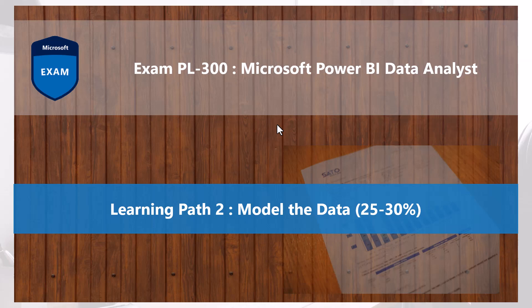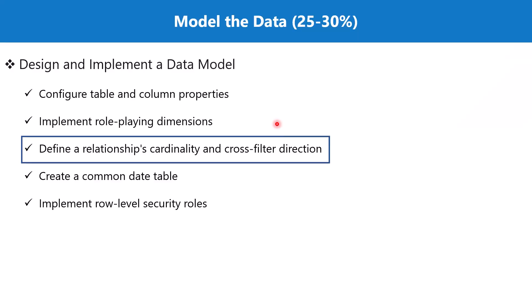Welcome back to the PL 300 exam preparation series where we are exploring the second learning path, 'Model the Data.' In this video we are going to discuss the topic: define relationships, cardinality, and cross-filter direction, which is part of the section 'Design and Implement a Data Model.' We are going to go back to the file where we developed the Maven Market example.